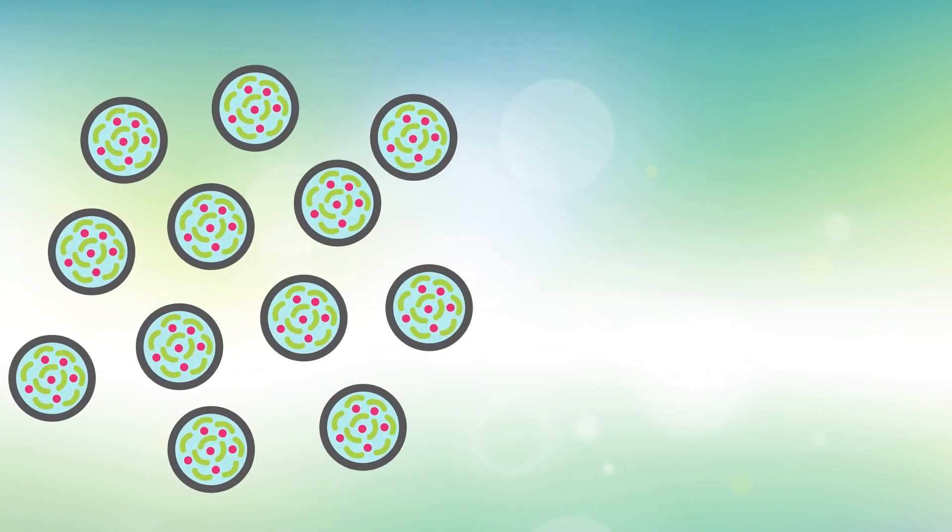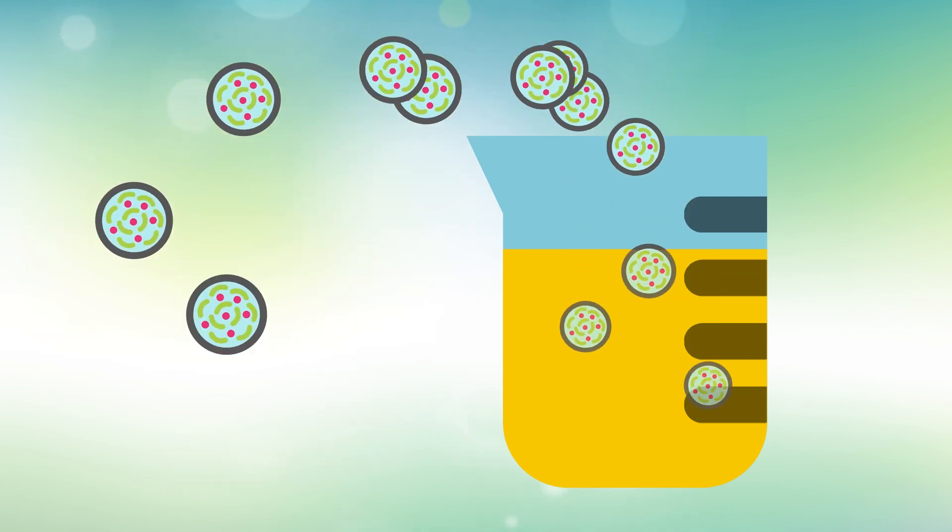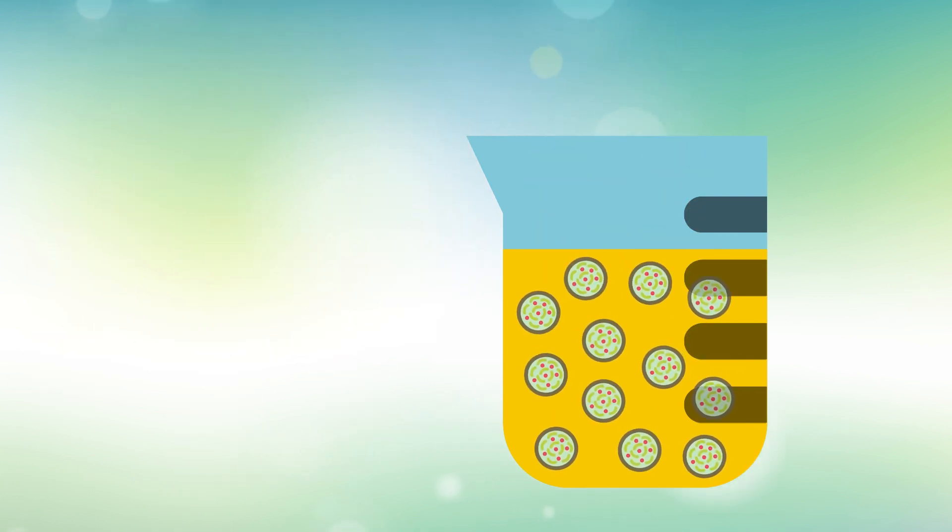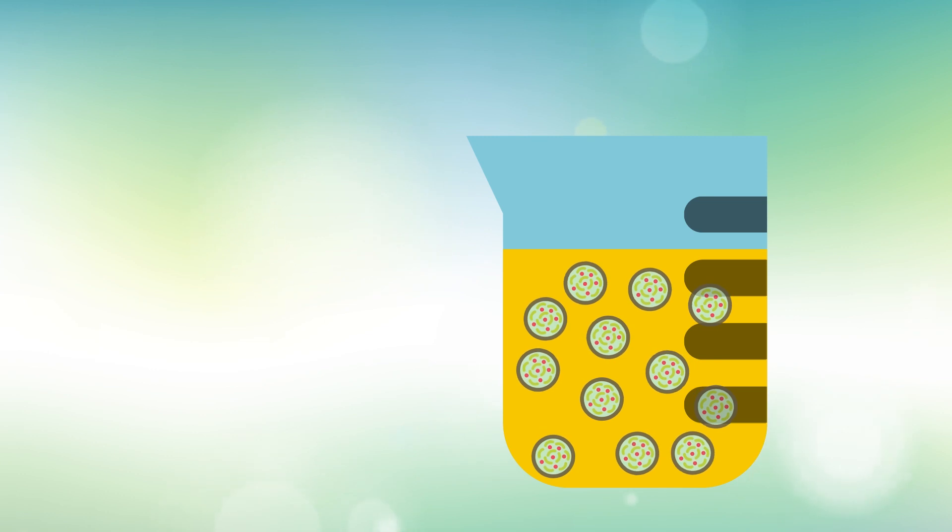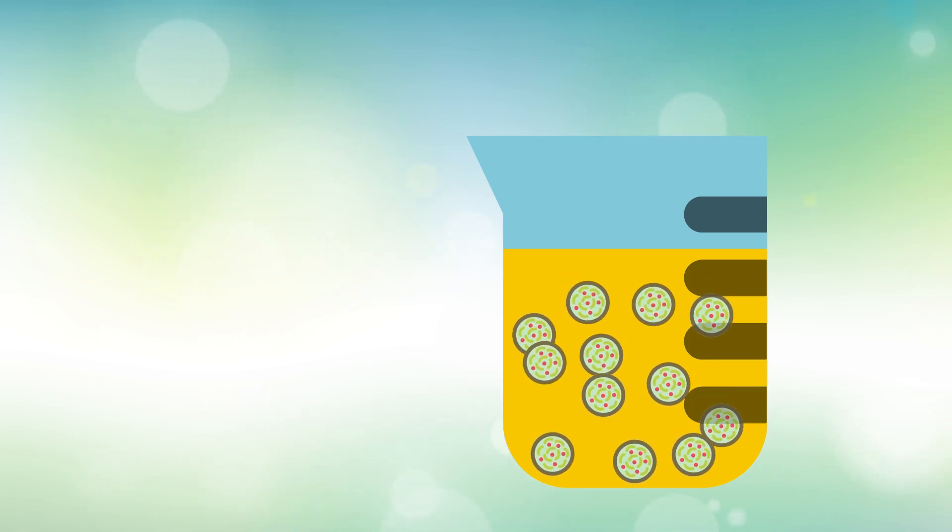One method that has been tested and proven is the liquid acid coating used in Probonics. In this process, the probiotics are saturated in an acid solution that places bacteria in a temporary static state and protects them against stomach acid.